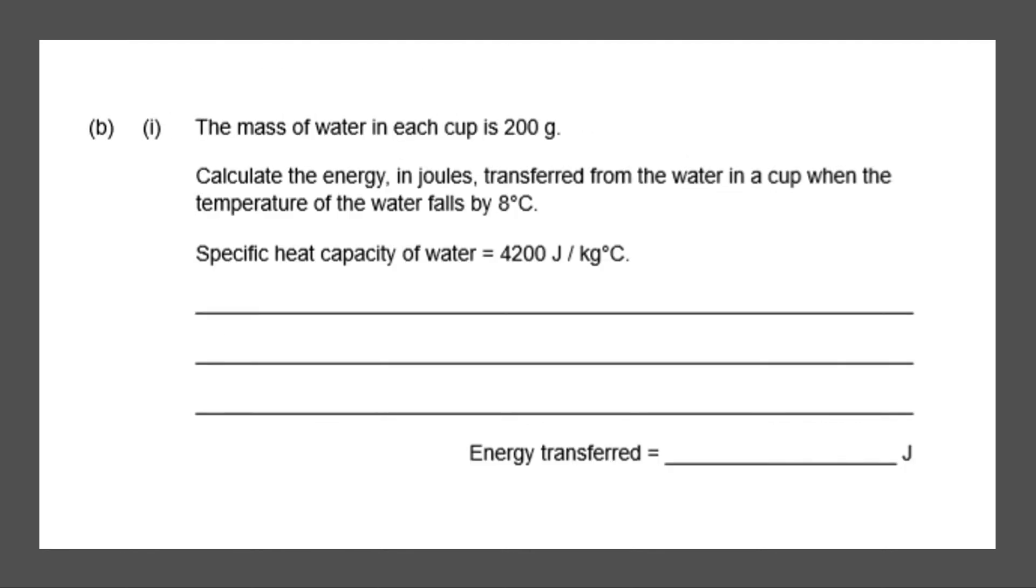Next question. The mass of water in each cup is 200 grams. Calculate the energy in joules transferred from the water in a cup when the temperature of the water falls by 8 degrees C. The specific heat capacity is 4200 joules. Okay, so the mass is in grams so we need to convert this. It would be 0.2 kilograms multiplied by the specific heat capacity, which is 4200 joules, multiplied by the temperature change which is 8 degrees C.